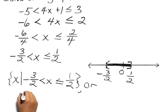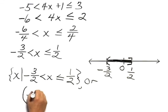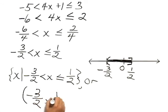Or to use interval notation, it's the interval between negative 3 halves, not including 3 halves, and 1 half, including 1 half.